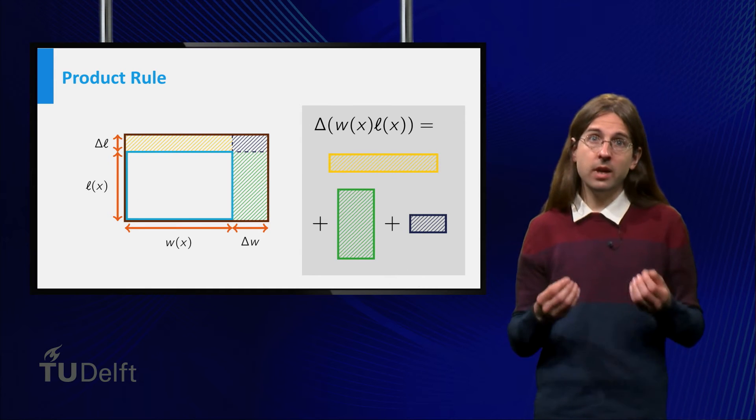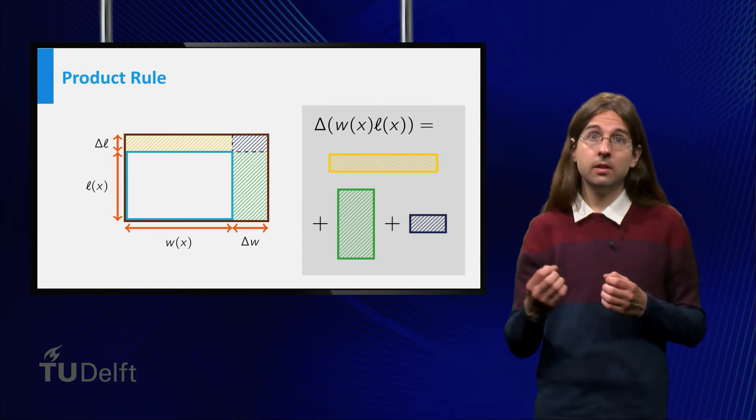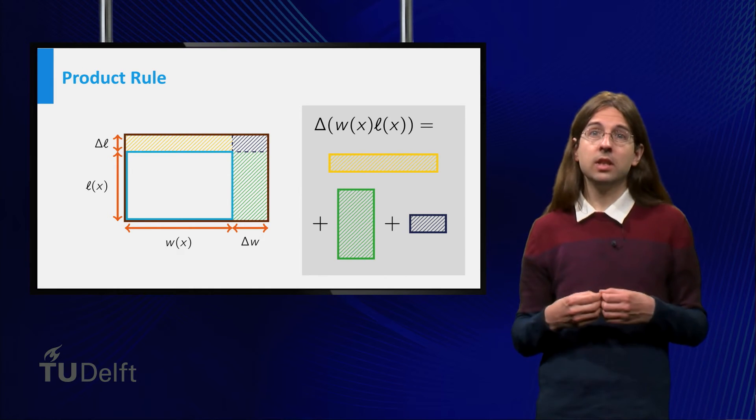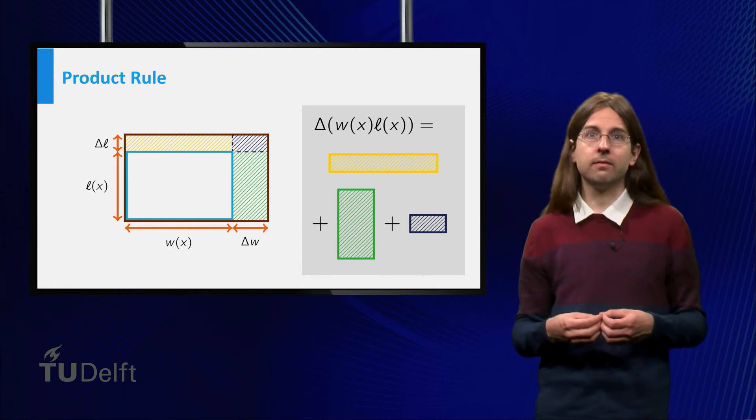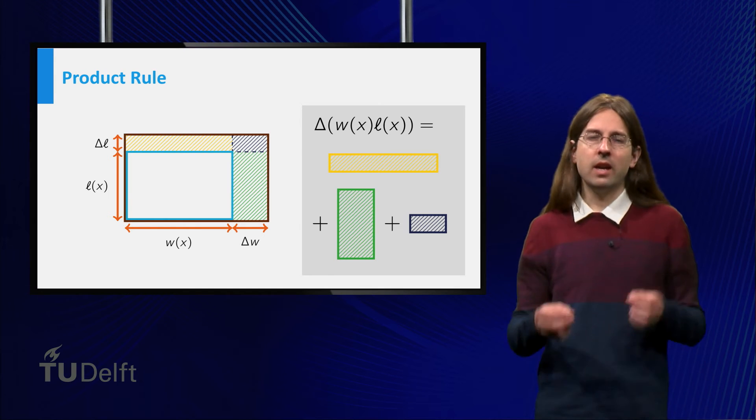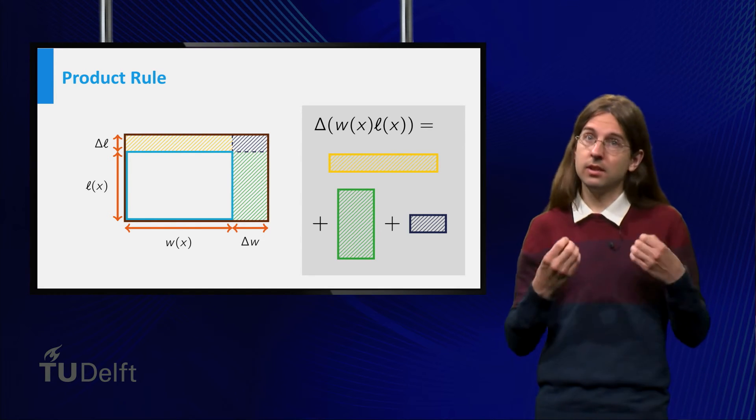Having x increase to x plus delta x increases both the width and the length. The extra area can be split in three parts. The yellow part equals the width times the change in length. The green part is the length times the change in width. And the small purple rectangle is the change in length times the change in width.